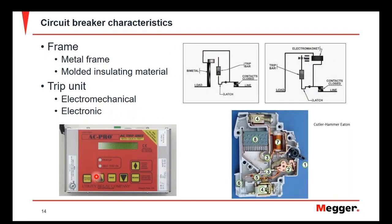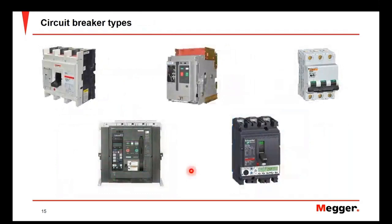For electronic trip units, a set of current sensors is mounted to the main conductors of the circuit breaker. They send signals to the electronic trip unit, which then outputs to a trip mechanism to open the breaker. Examples shown include molded case circuit breakers outfitted with electronic trip units, metal frame breakers also with electronic trip units, and a miniature breaker that you may see in a control power scheme.